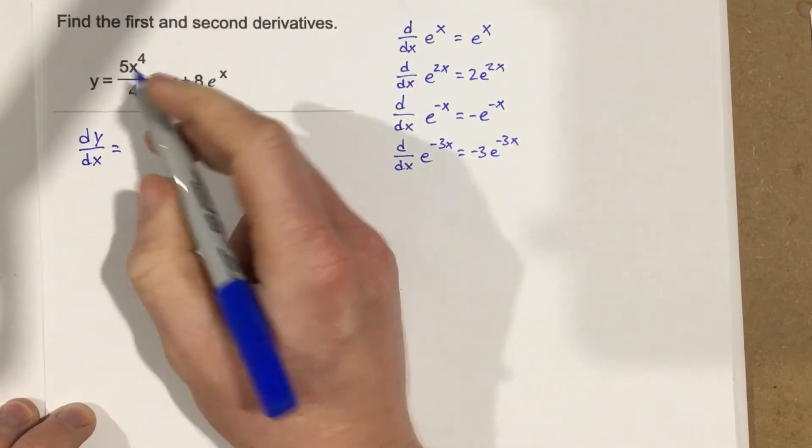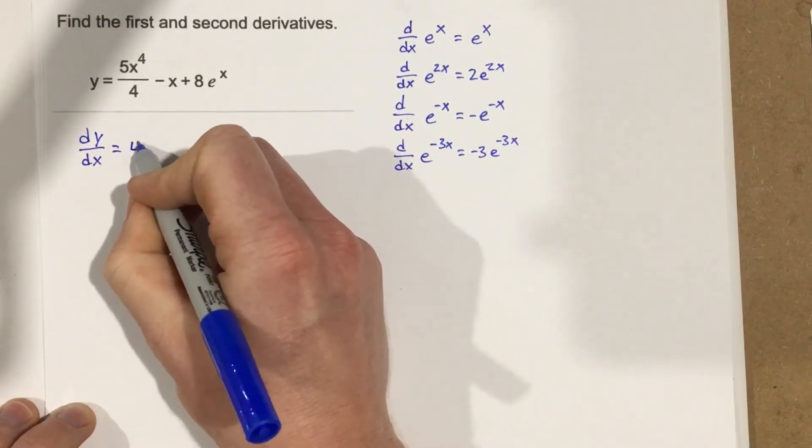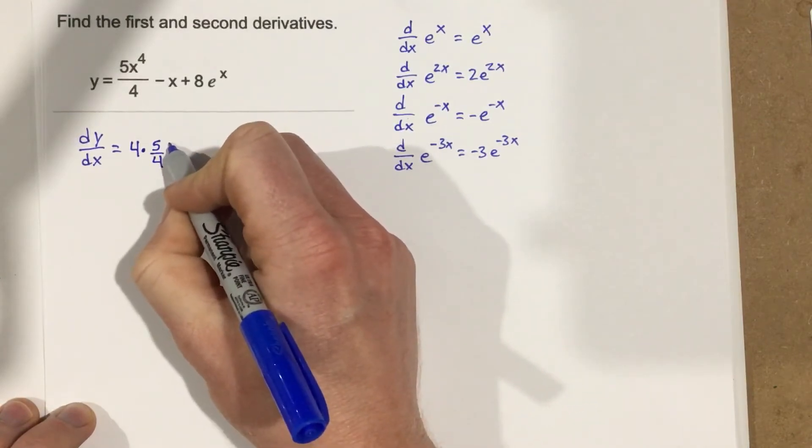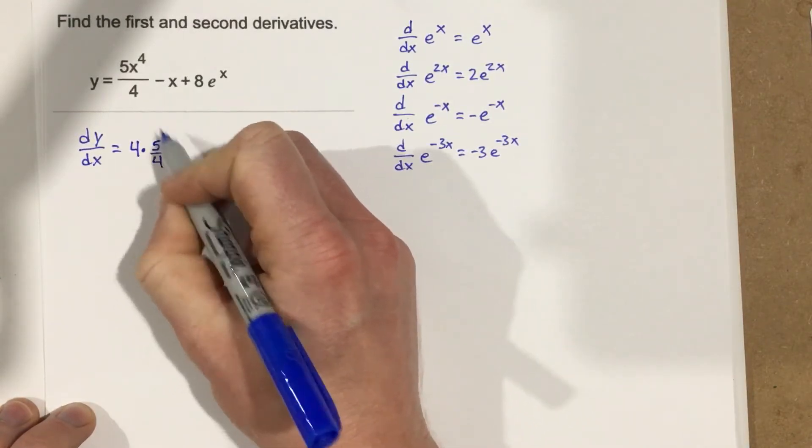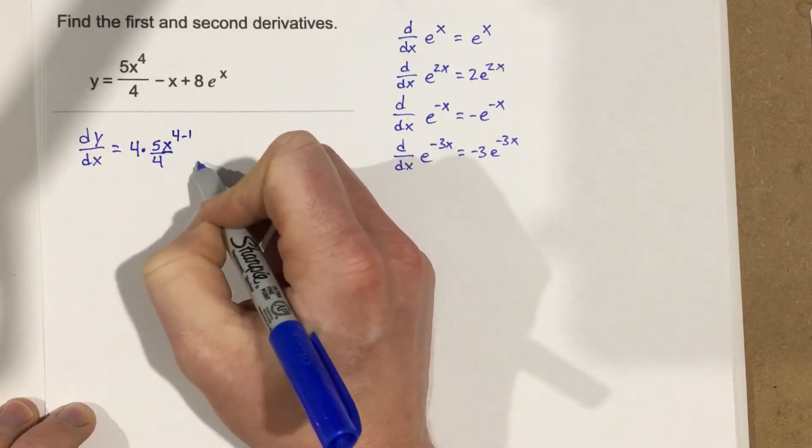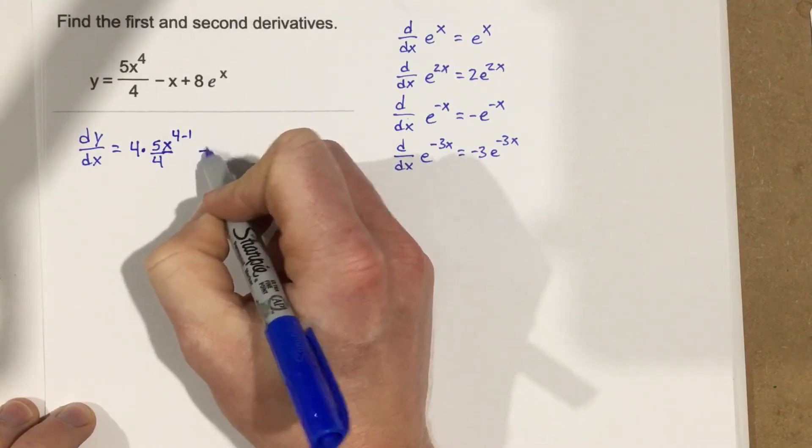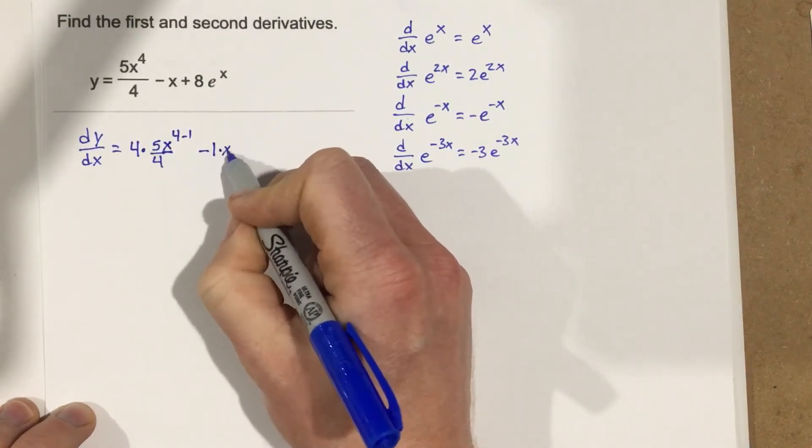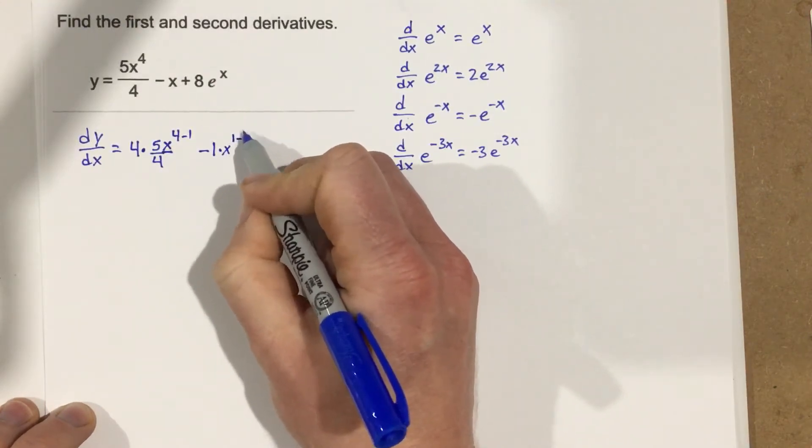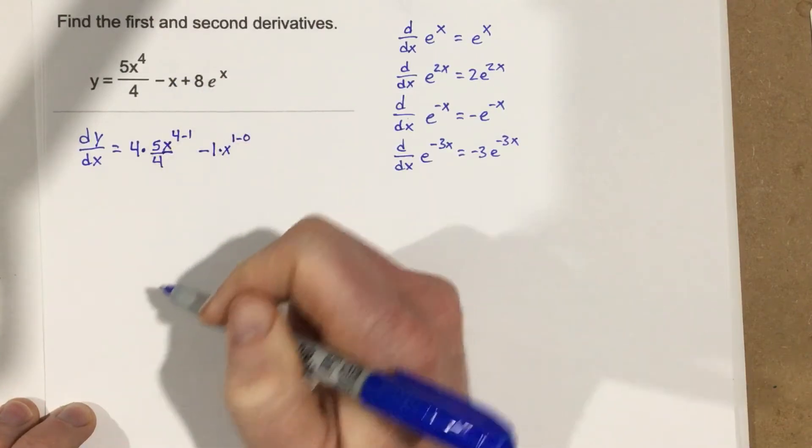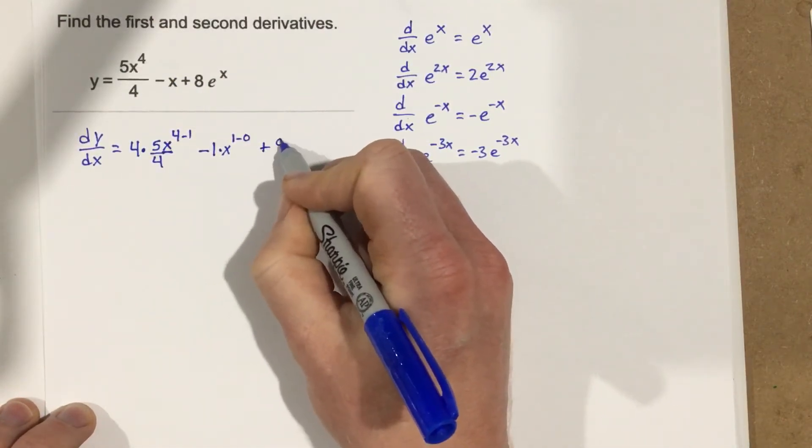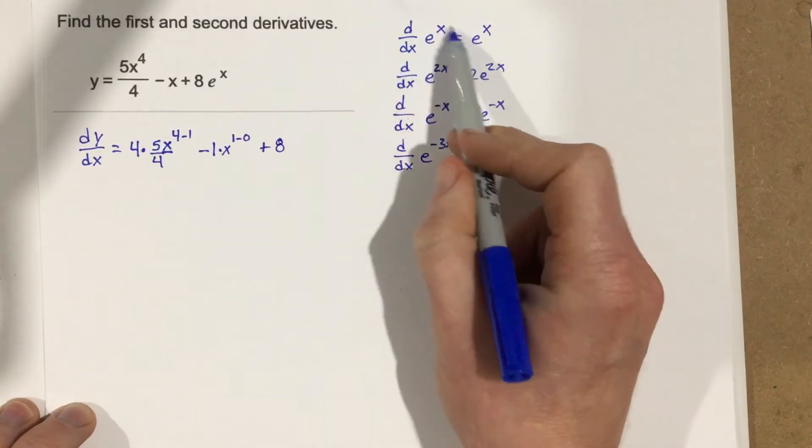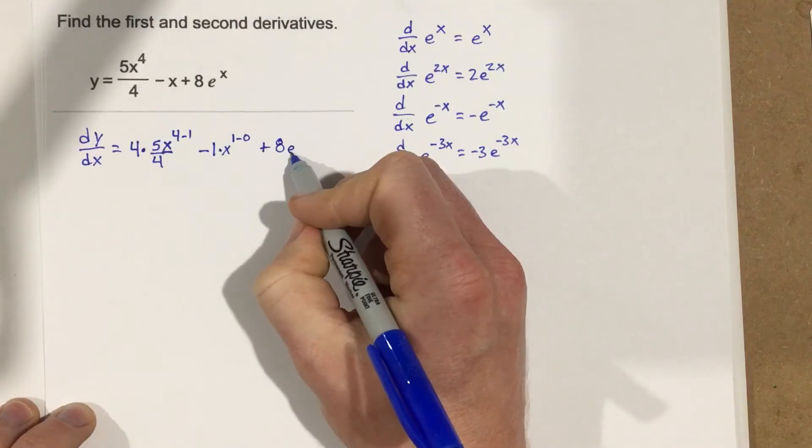Equals, we take the power and bring it to the front, so it's 4 times 5 over 4. And then we're going to say x to the 4 minus 1, minus, bring the 1 to the front, so this would be 1 times x to the 1 minus 1, because this has a power of 1, plus 8. And then we have e to the x, we know the derivative of e to the x is just e to the x, so we end up with 8e to the x.